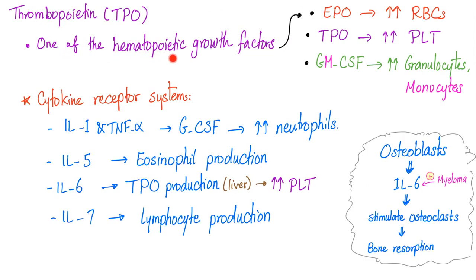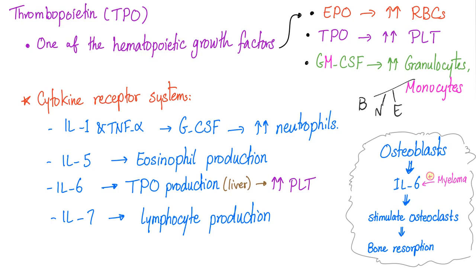Thrombopoietin, or T-Po, is one of the hematopoietic growth factors. EPO increases the number of red blood cells. T-Po increases the number of platelets. GM-CSF — granulocyte-monocyte colony-stimulating factor — increases the number of granulocytes and monocytes. The three famous granulocytes are basophils, neutrophils, and eosinophils.